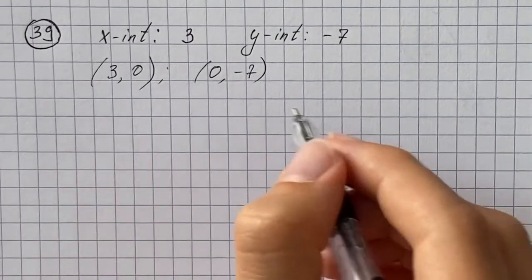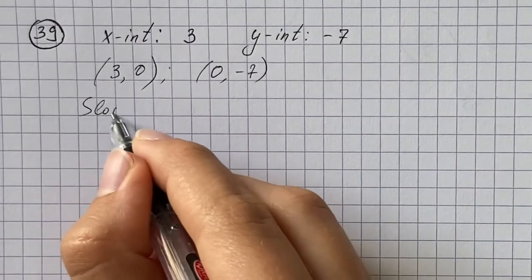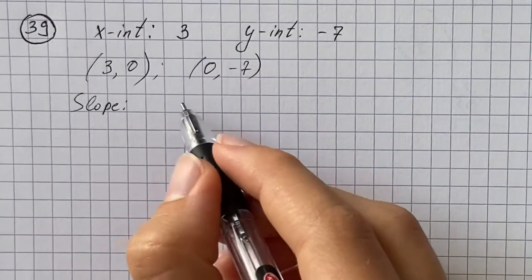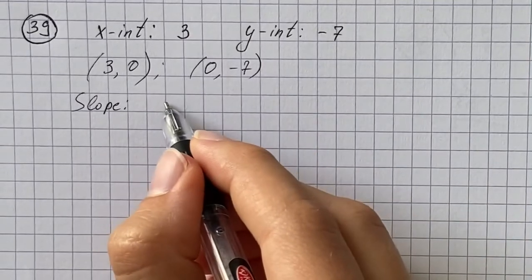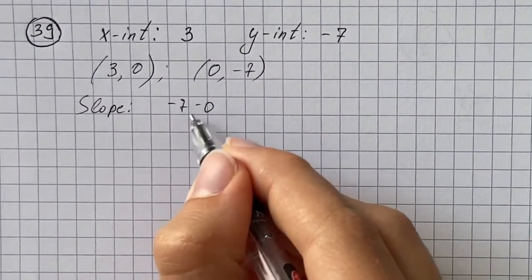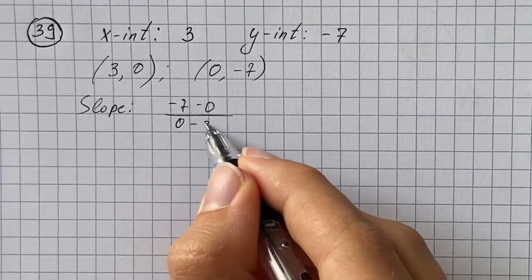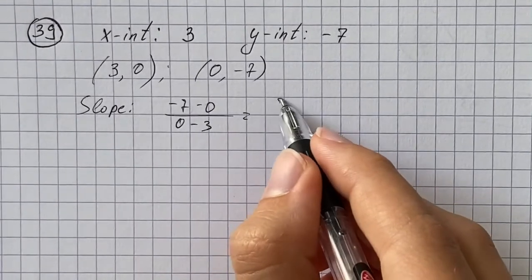So now I'm going to figure out the slope. So that change in y, which is negative 7 minus 0, over change in x, so that's 0 minus 3, and that gives 7/3.